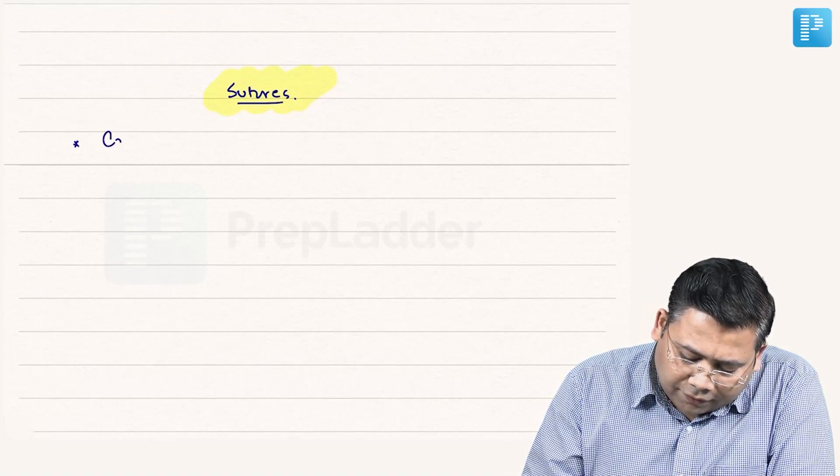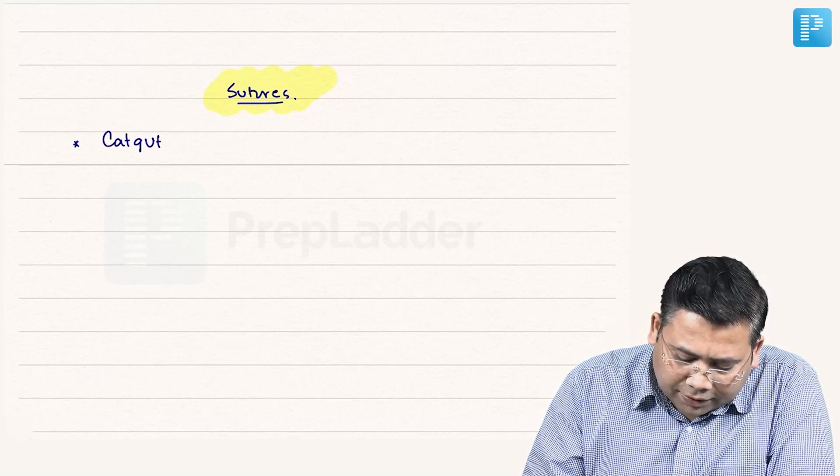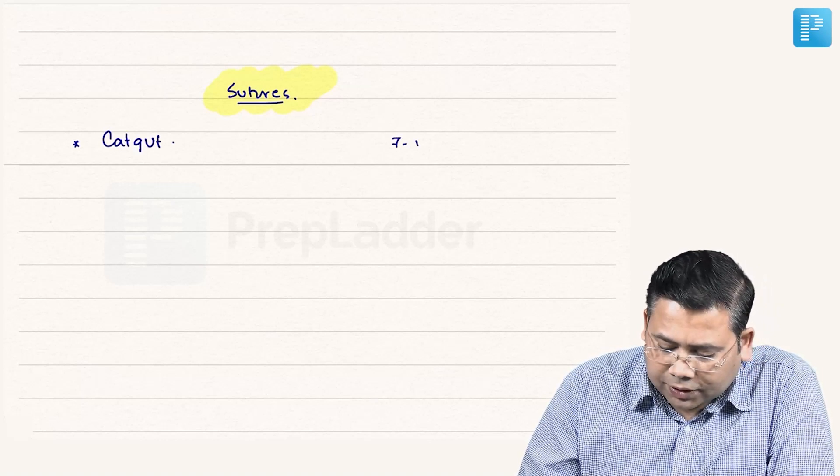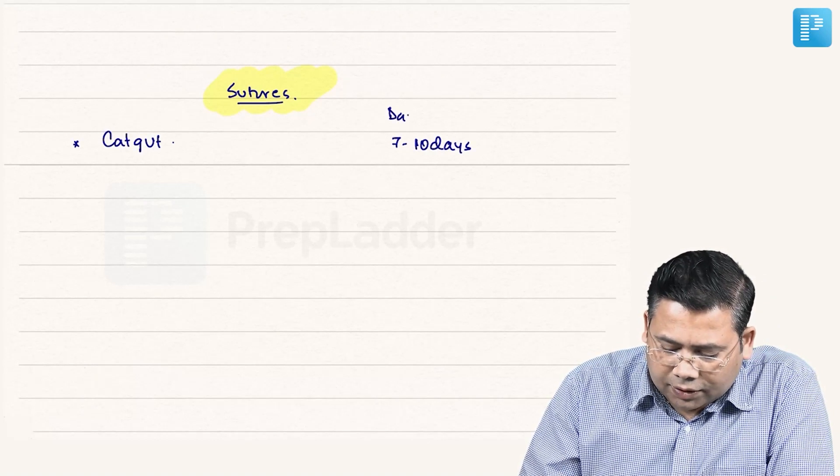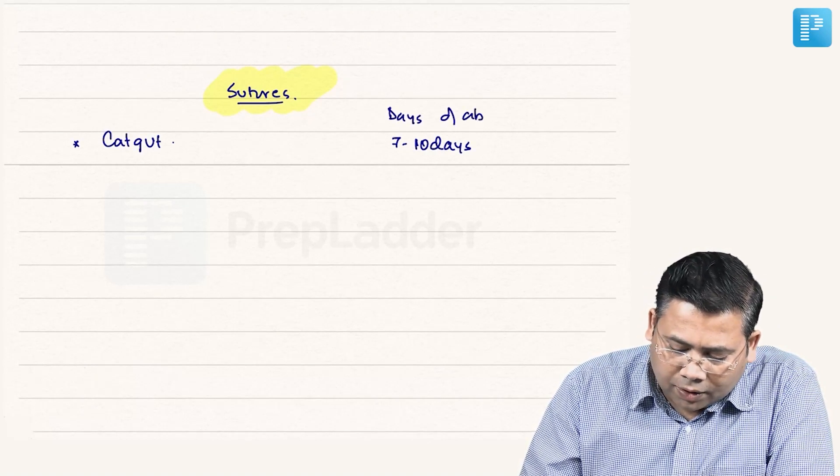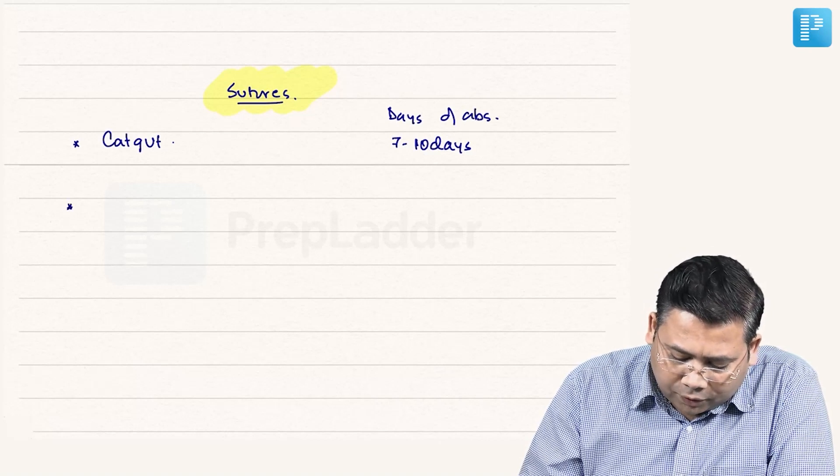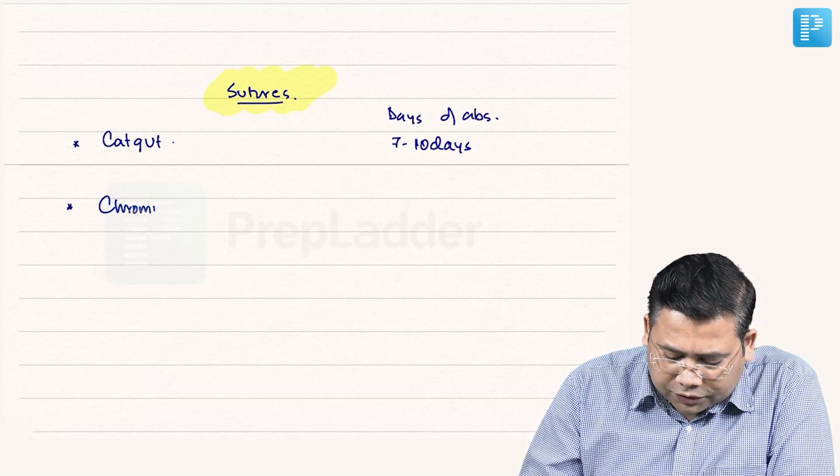We have catgut, and days of absorption is 7 to 10 days. But we are not using the pure catgut, we are using the chromic version of catgut. So chromic catgut, yes, this is going to absorb in 90 days.